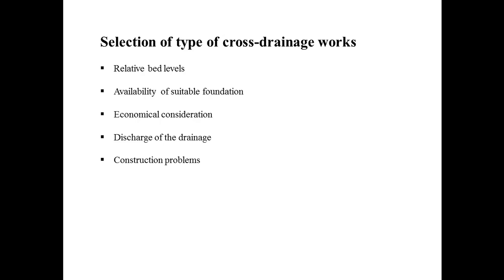Third is the economical consideration — according to the economic condition, the type of cross drainage works should be selected. Fourth is the discharge of drainage — the discharge of drainage should be properly studied and the type selected accordingly. Last is the construction problems — depending upon the above conditions, the construction problems should be studied and the type of cross drainage works selected having the least construction problems.